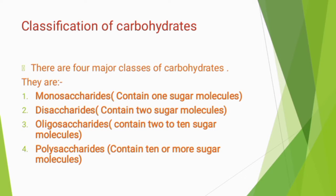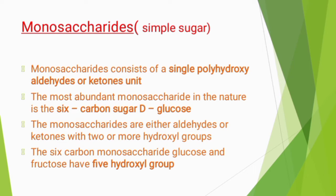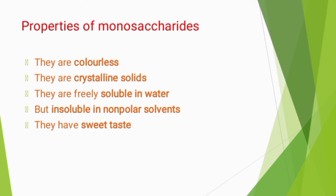We are dealing with monosaccharides, which are otherwise known as simple sugars. Monosaccharides consist of a single polyhydroxy aldehyde or ketone unit. The most abundant monosaccharide in nature is the 6-carbon sugar D-glucose. Monosaccharides are colourless, crystalline solids, freely soluble in water but insoluble in non-polar solvents, and sweet in taste.